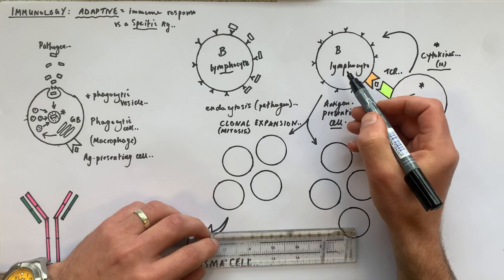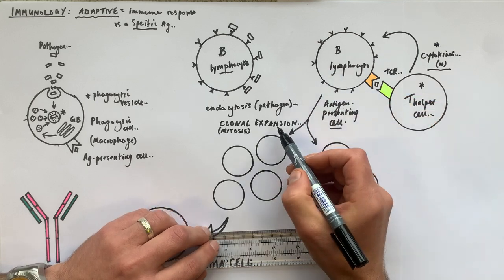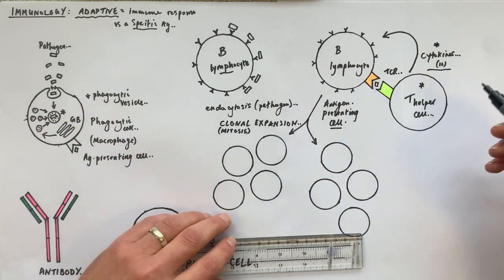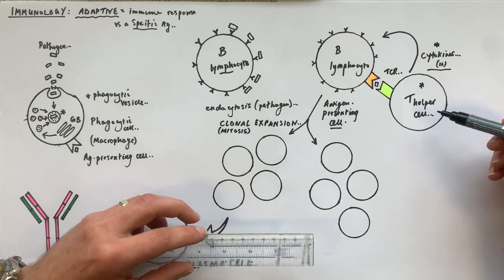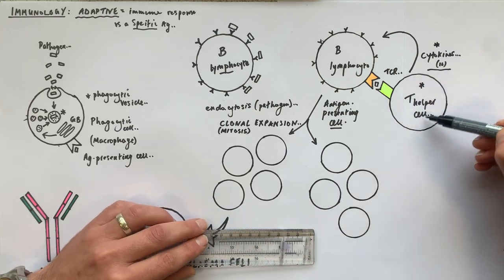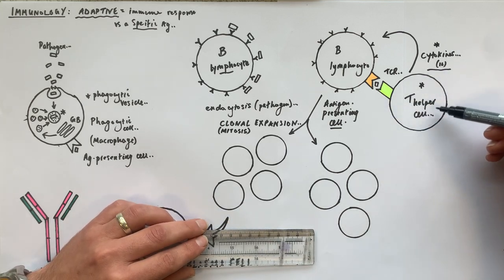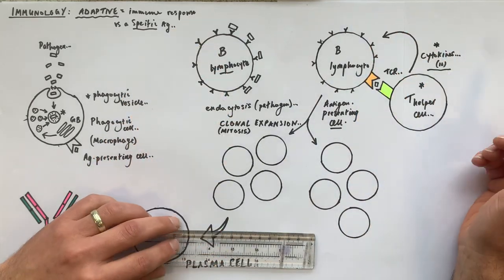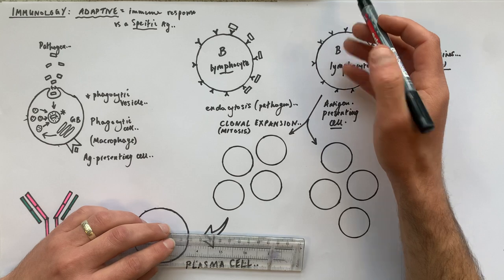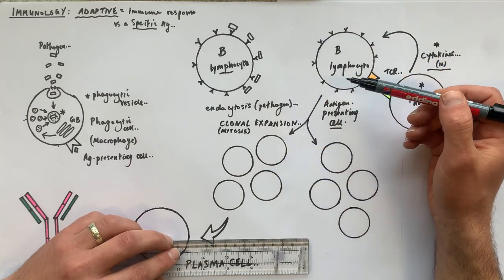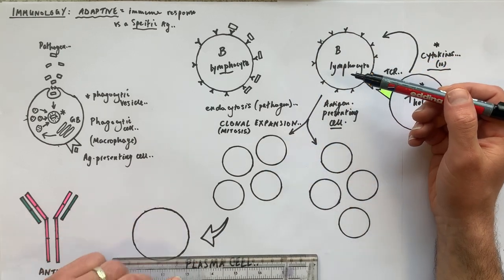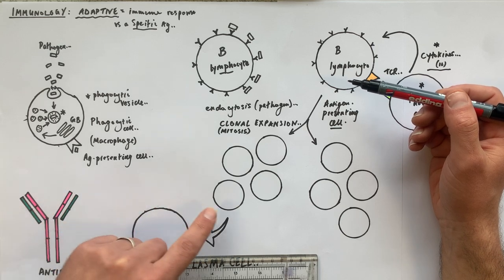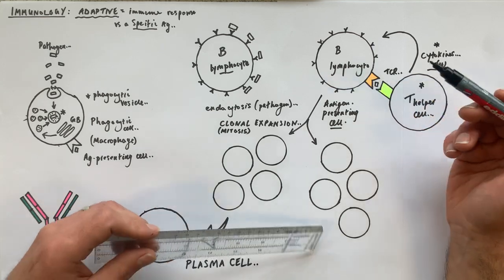At the same time as the B lymphocyte undergoing clonal expansion, the T helper cell itself will also undergo clonal expansion to make thousands of genetically identical daughter cells. The B lymphocyte response on the left is going to be called the humoral response, because it results in the production of antibodies secreted from a specialized type of B cell called a plasma cell.